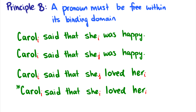Principle B says essentially the opposite: a pronoun must be free within its binding domain — meaning a pronoun is not bound within its binding domain. So when we say 'Carol said that she was happy,' 'she was happy' is a small TP, but the binder 'Carol' is outside of that binding domain, which is the smallest TP. Therefore, this is okay because pronouns have to be free within their binding domain.